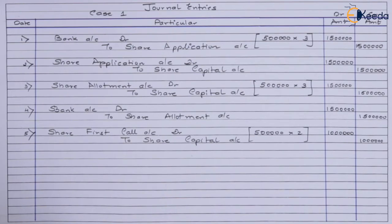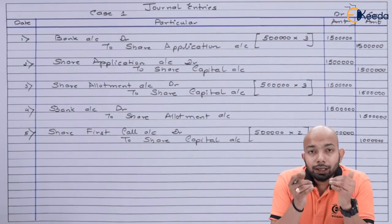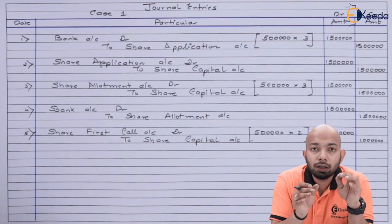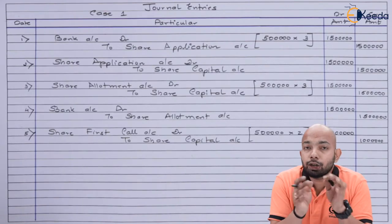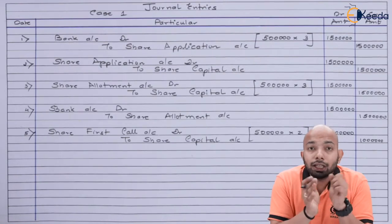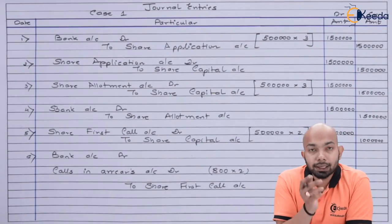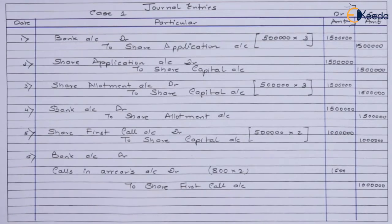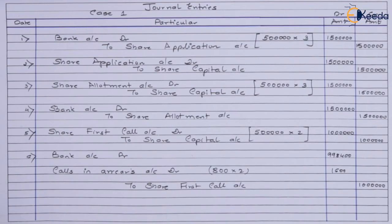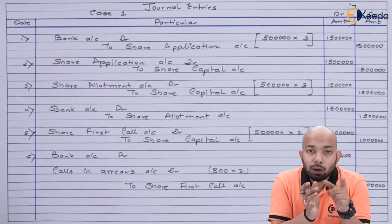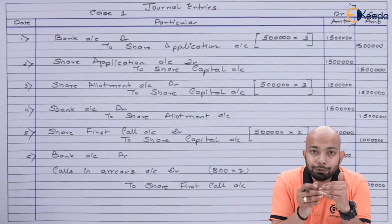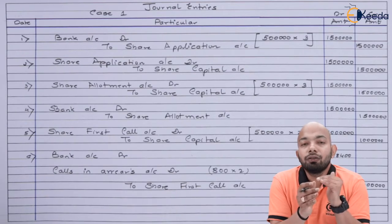For the first call due, the expected amount is 5 lakh shares multiplied by ₹2, giving ₹10 lakh. However, 800 shares weren't paid, so calls in arrears amounts to 800 multiplied by ₹2 = ₹1,600. Out of ₹10 lakh, ₹1,600 is subtracted, leaving ₹9,98,400 received in the bank account.